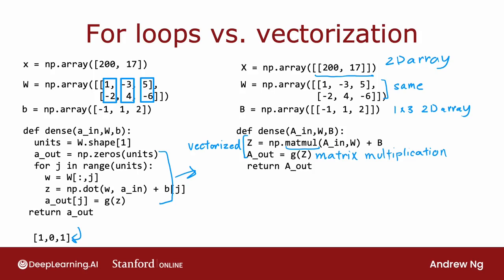You compute Z, which is now a matrix, as np.matmul between A_in and W, where A_in and W are both matrices. Matmul is how NumPy carries out a matrix multiplication - it multiplies two matrices together and then adds the matrix B to it. Then A_out is equal to the activation function g, the sigmoid function, applied element-wise to this matrix Z, and you return A_out.